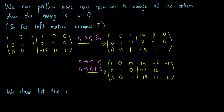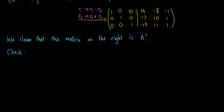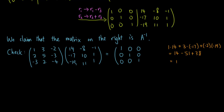Now we claim that the matrix on the right is the inverse of A, and we can check this by multiplying A by this matrix and multiplying this matrix by A, and checking that both are equal to the identity matrix. If we multiply A by this matrix, the top left entry equals 1×14 + 3×(-17) + (-2)×(-19), which equals 14 - 51 + 38 = 1. Similarly, we obtain the rest of the entries in the matrix product, and indeed we obtain the identity matrix.